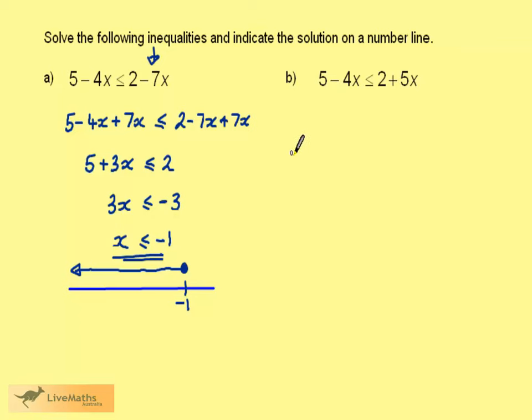We now have 5 minus 4x is less than or equal to 2 plus 5x. The smaller number of x's is minus 4. Add 4x to both sides of the inequality.